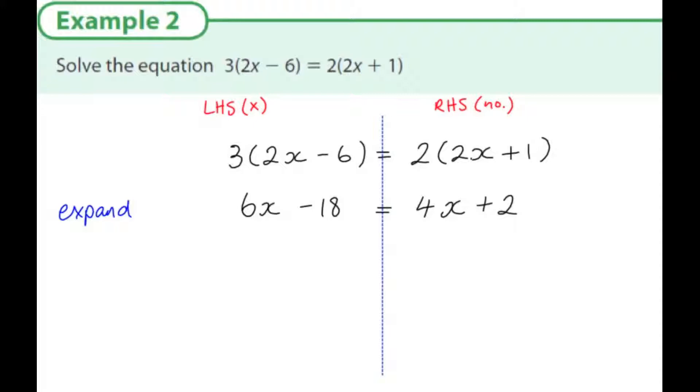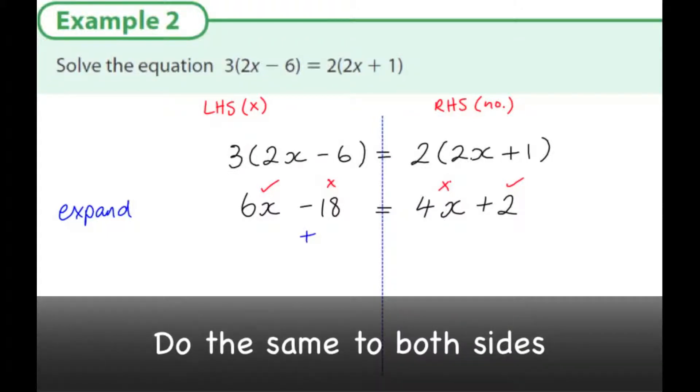Now let's think about which items here are we happy with, which ones are on the right side. Well, 6x, the x is on the right side. The minus 18, I want the numbers on the other side. The 4x, I like it on the other side. And the plus 2, I'm happy where that is, because the numbers are meant to be on that side.